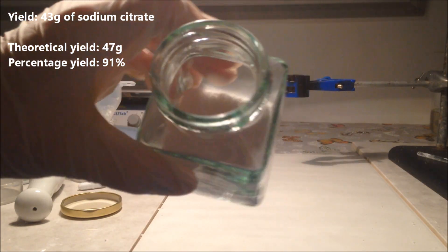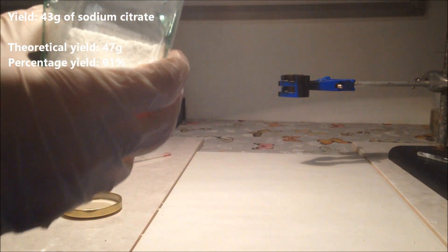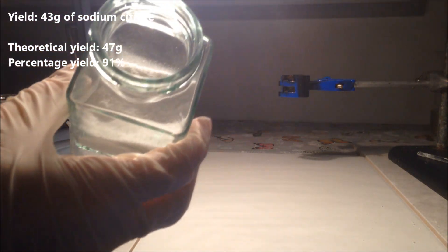I eventually got 43 grams of near powder sodium citrate, which shows about a percent yield of 91%, which is all right. I can see lots of ways I could have improved, but ultimately I'm quite happy with that percentage yield.